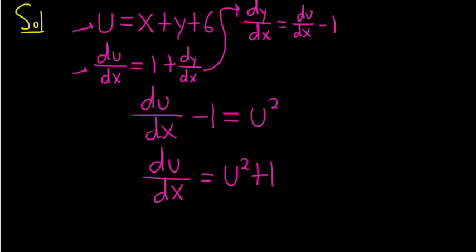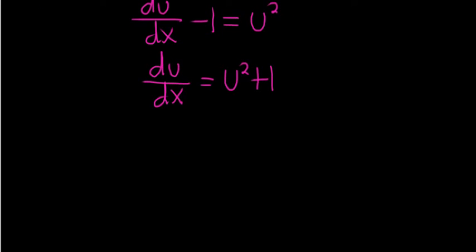Divide both sides by u squared plus 1. That's going to give us du over (u squared plus 1) equals dx. And now we can integrate both sides.